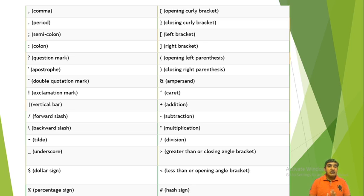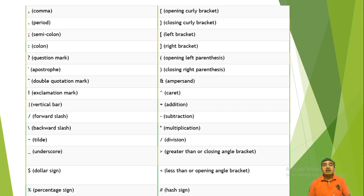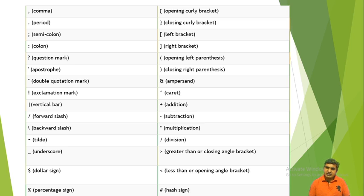More special symbols include: backward slash, tilde, underscore, dollar sign, percentage sign, open curly bracket, closing curly bracket, left bracket, right bracket, opening parenthesis, closing parenthesis, ampersand, caret, addition, subtraction, multiplication, division, greater-than or closing angle bracket, less-than or opening angle bracket, and hash sign.